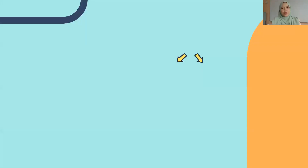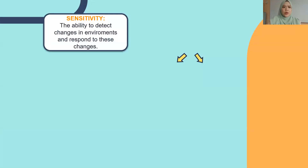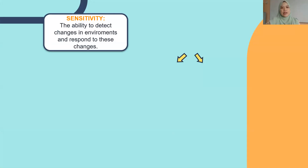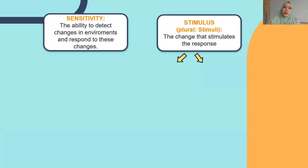So first of all in this chapter, what you are going to learn — first terms: what is meant by sensitivity. Sensitivity is the ability to detect changes in the environment and respond to these changes. And stimulus — what is meant by stimulus? Stimulus is known as the change that stimulates the response.